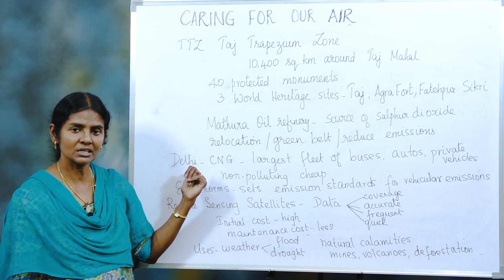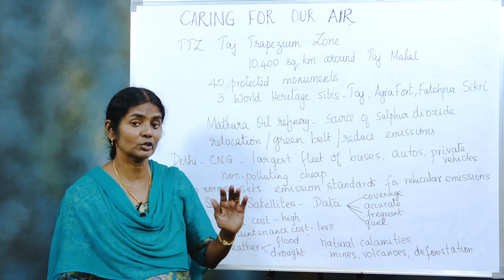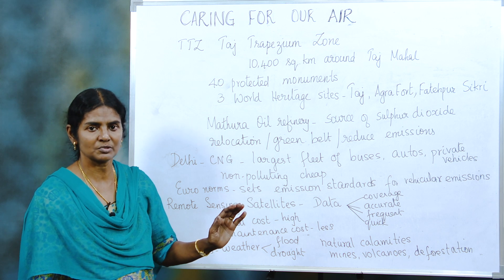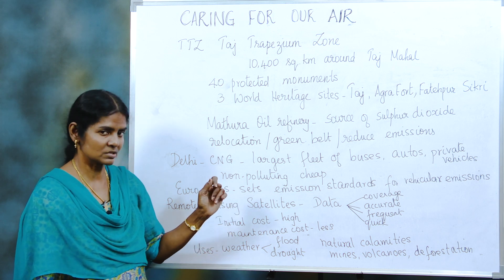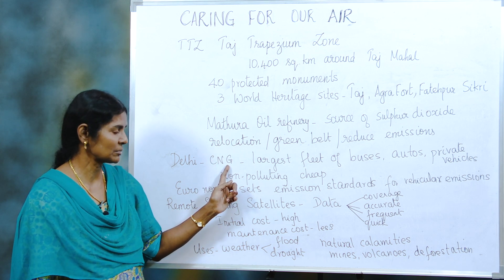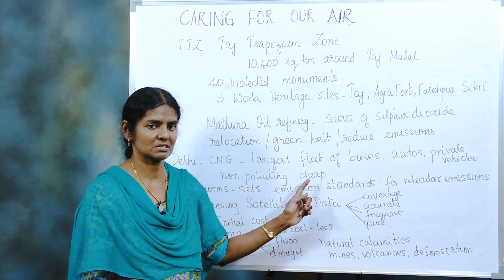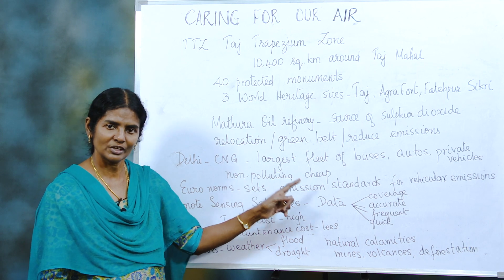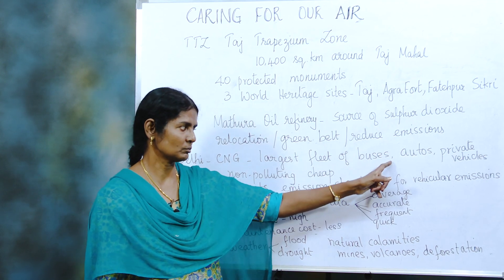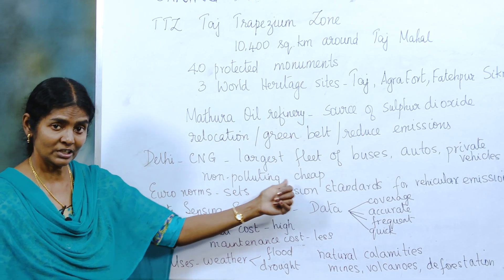Next we go to Delhi. Delhi was having highly polluted air — not good for anybody to breathe. That's when an alarm was raised and they started implementing CNG buses. Today Delhi has the largest fleet of CNG buses. All other cities have followed. They now have green autos, CNG buses, and even private vehicles run on CNG. These are non-polluting and cheap.